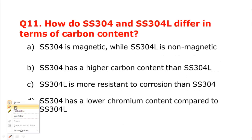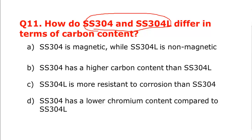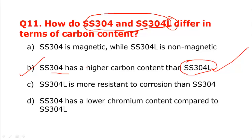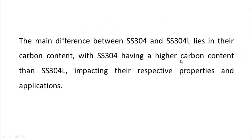Question number eleven: how do SS 304 and SS 304L differ in terms of carbon content? Whenever you see the letter L in a stainless steel specification, it indicates low carbon content. The correct answer is option B: SS 304 has a higher carbon content compared to SS 304L. With this we have come to the end of today's video — please share your feedback and suggestions.